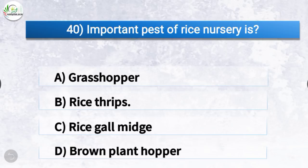Question number 40: Important pest of rice nursery is? The correct answer is option B, rice thrips.